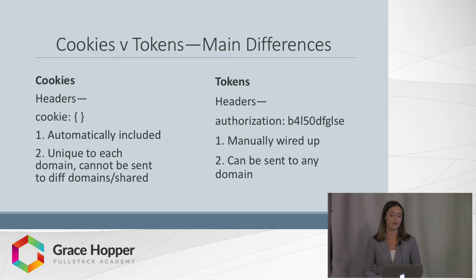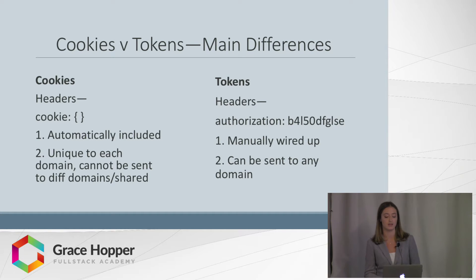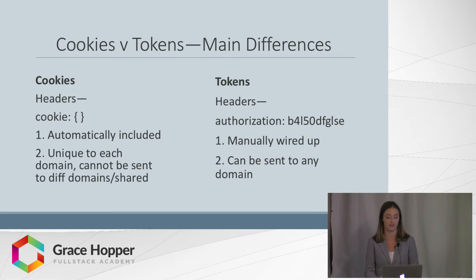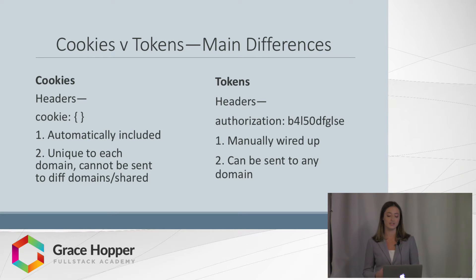So there are three main differences between cookies and tokens. Security data is either stored in the headers of a request as a cookie object on an otherwise stateless HTTP request, or as an authorization string. Cookies are unique to each domain for security purposes, so a less secure site cannot hijack your session.